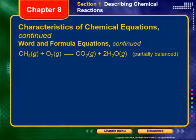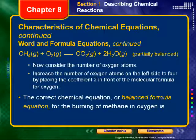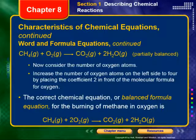Continuing to balance, having handled carbon and hydrogen, we now consider oxygen. We increase the number of oxygen atoms on the left side to four by placing a coefficient of two in front of O₂ — remembering it's diatomic. The correct balanced chemical equation for the burning of methane is: CH₄ + 2O₂ → CO₂ + 2H₂O.